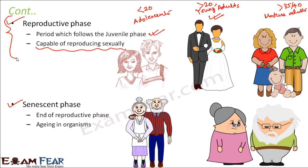Now we will talk about the changes that take place inside the body of a male or a female when reproductive changes start occurring — that is, when they just start entering into adolescence, transitioning from childhood. During that time, what are the physical as well as mental changes that take place in an individual?